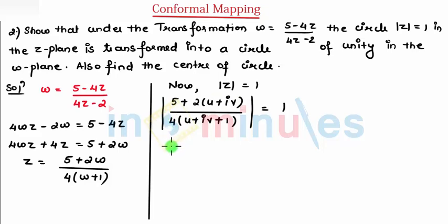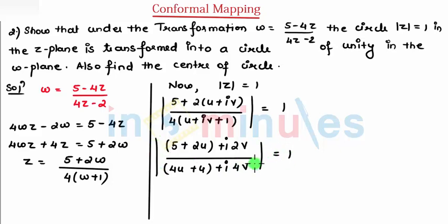Let's separate imaginary and real terms. So I can write pi plus 2u plus, I can take i outside, 2iv divided by 4u plus 4 plus i4v. That is equal to 1. Now I can take under root of this.